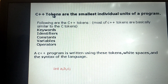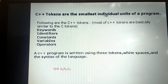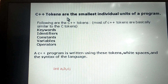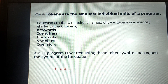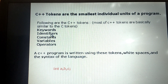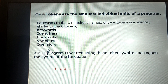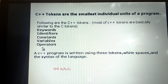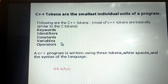What is a token? What do you mean by tokens? Tokens are the smallest individual units of a program. What are the tokens we have? Keywords, identifiers, constants, variables and operators. These are the tokens supported in C++ or any programming language.